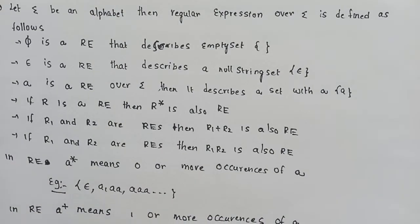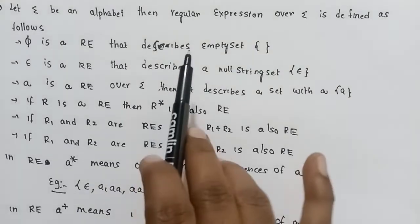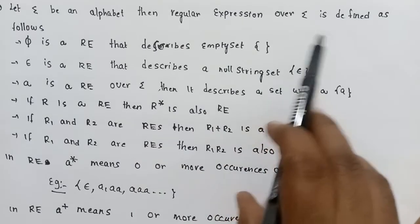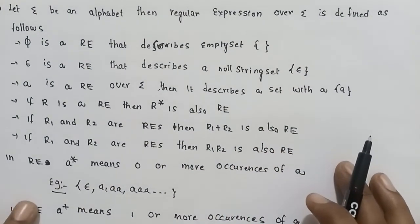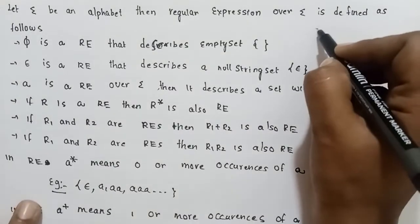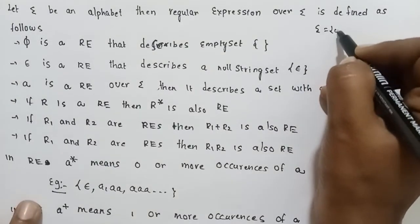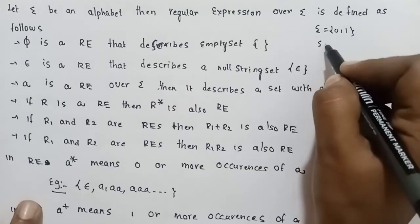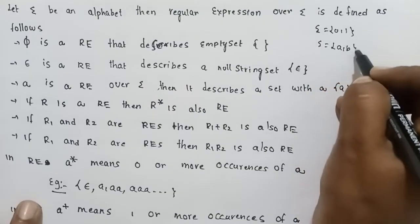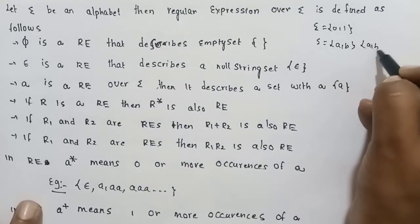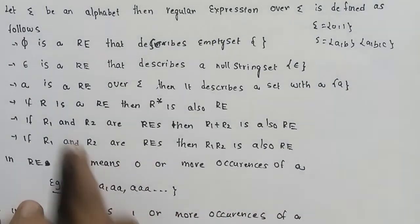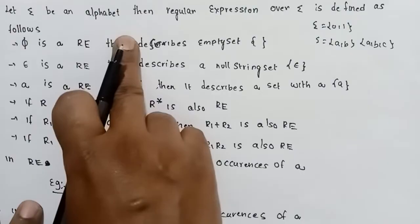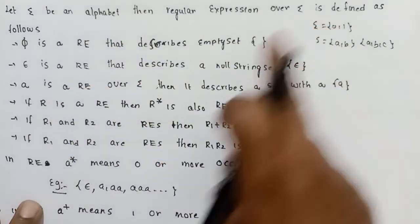Now the formal definition is called the regular expression. Let Sigma be an alphabet; then the regular expression over Sigma is defined as follows. Sigma is a set of input symbols — for example, {0,1} or {A,B}. Let Sigma be an alphabet; then regular expression over Sigma is defined.